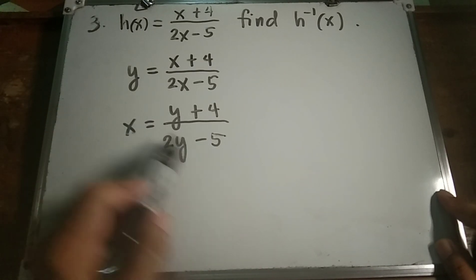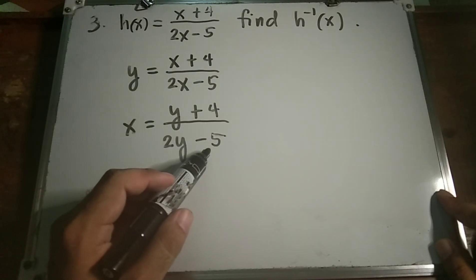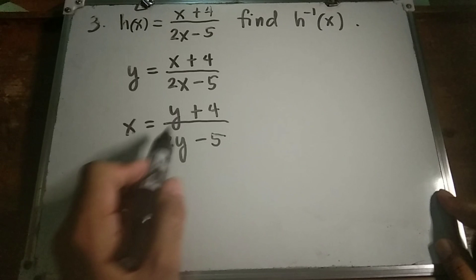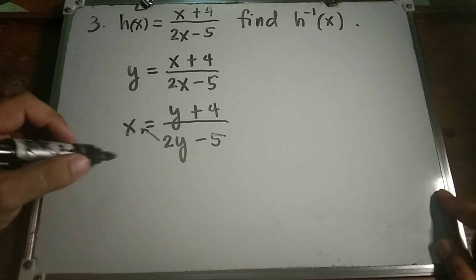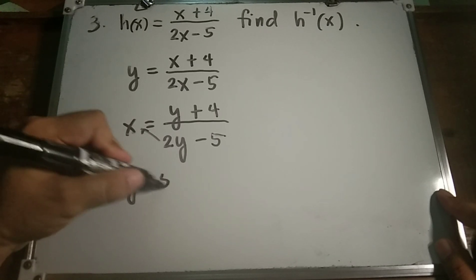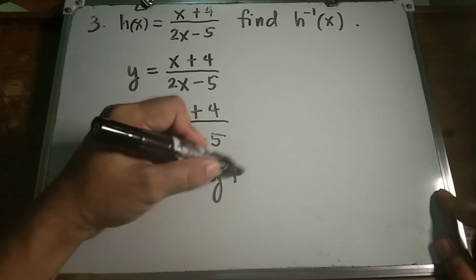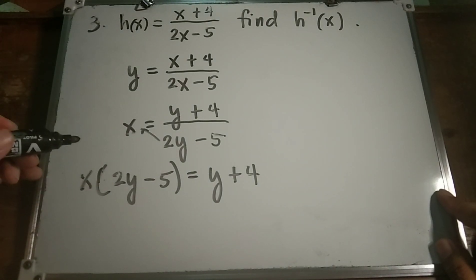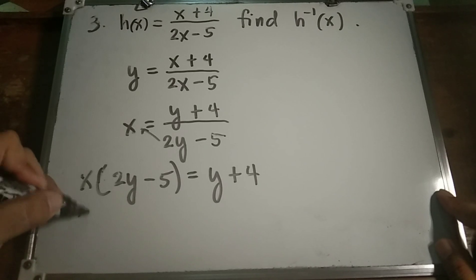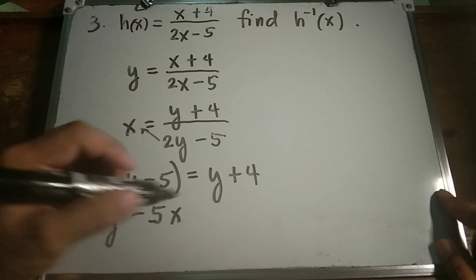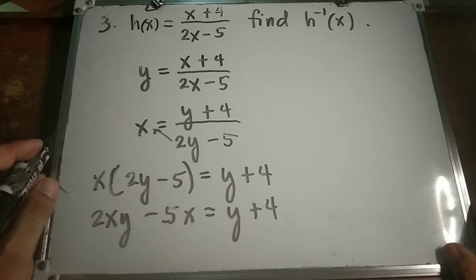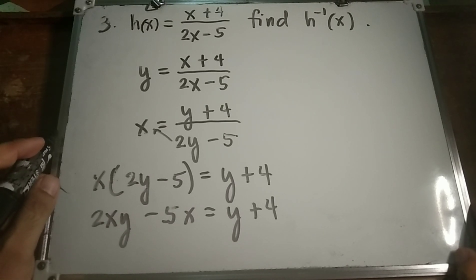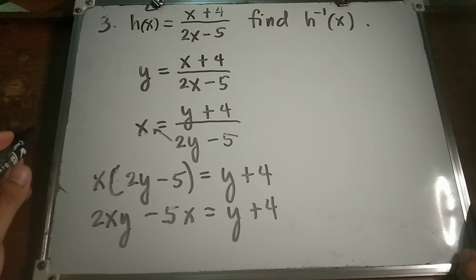Cross multiply, or multiply both sides by 2y minus 5 to eliminate the denominator. So x times 2y minus 5 equals y plus 4. Then distribute x inside the parentheses: we have 2xy minus 5x equals y plus 4. We want to find the value of y in terms of x, so put all y terms on the left side.